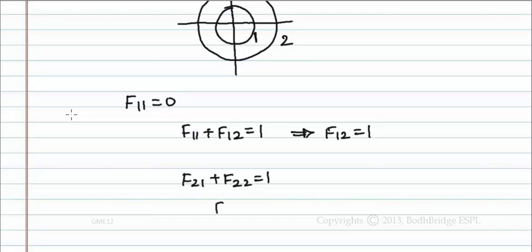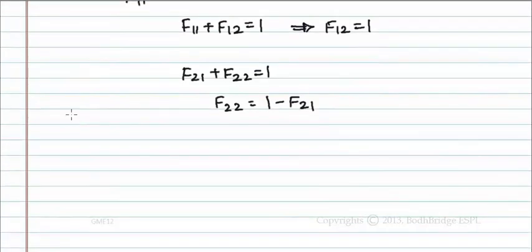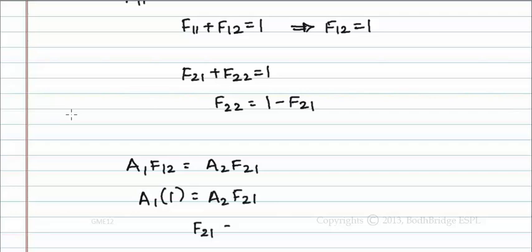But according to reciprocity rule, a1 f12 equals a2 f21. That is, a1 times 1 equals a2 times f21. So f21 equals a1 by a2.